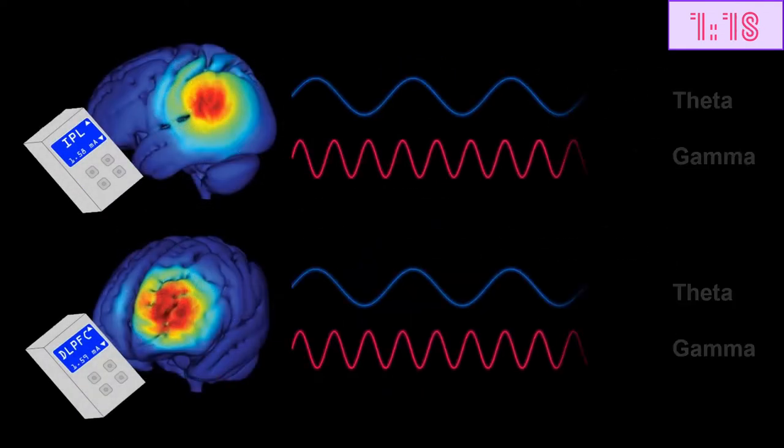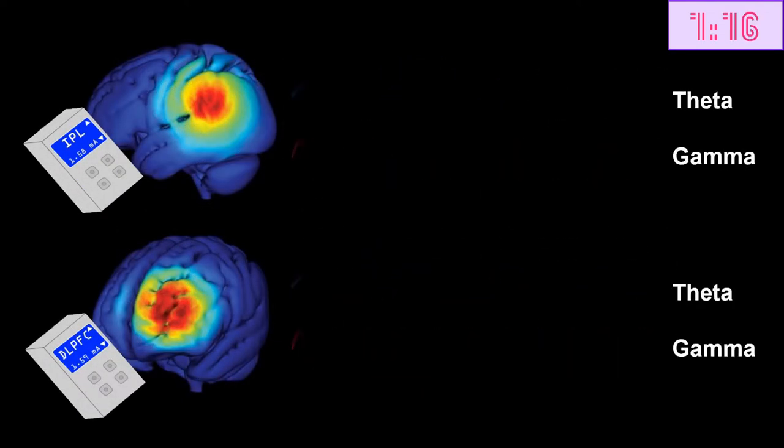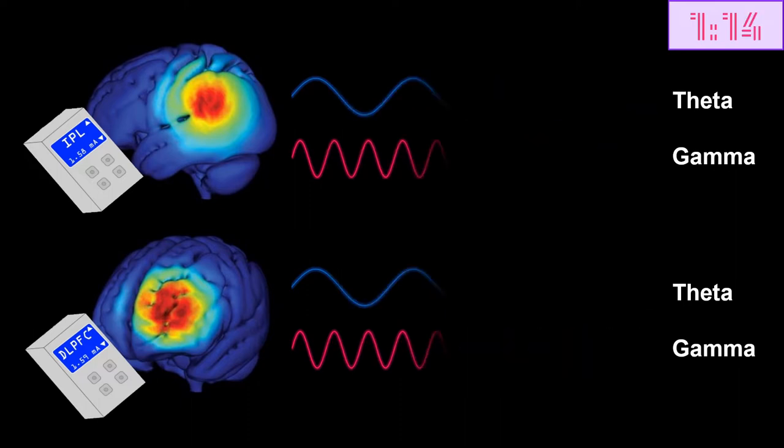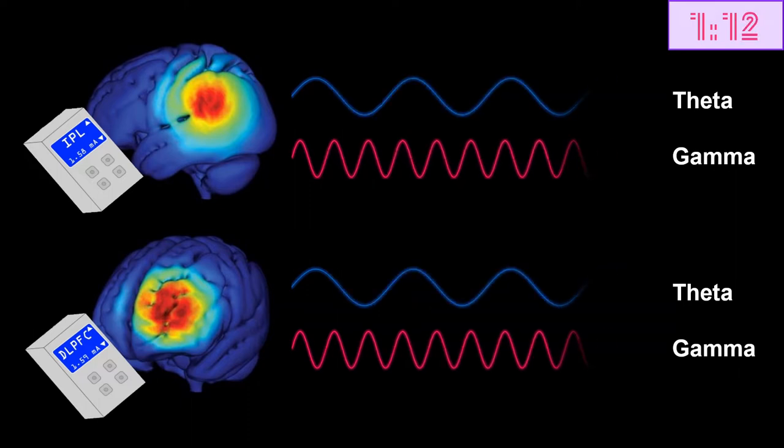Furthermore, they applied TACS at two different frequencies to target two different types of brain waves, so-called theta waves and so-called gamma waves.